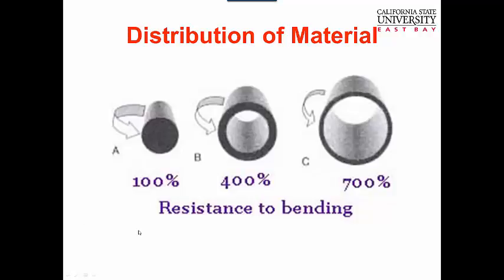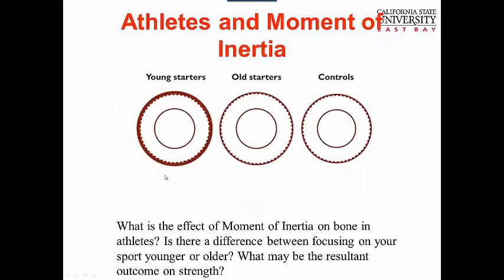Our bones are hollow structures: with the same amount of mass, depending on the geometry or architecture, they can be much stronger if hollow. A study looked at the increase in distribution of bone from exercise — this is called moment of inertia, the distribution of tissue away from the center of the bone. People who start exercising young have an increase on their periosteal side, which is good — more bone distributed further from the center. Older starters still add bone to the periosteal surface, but not as much. Controls show no change.